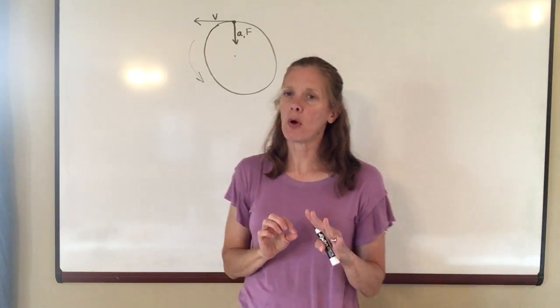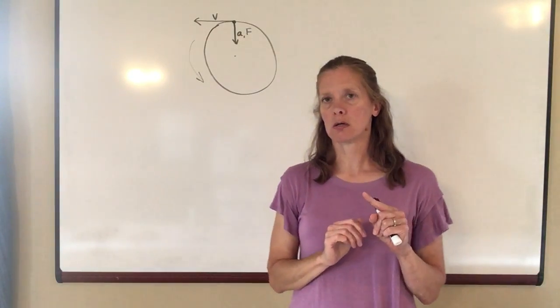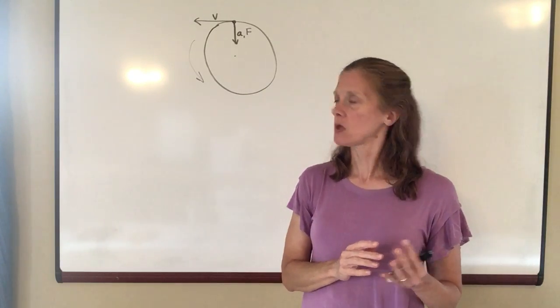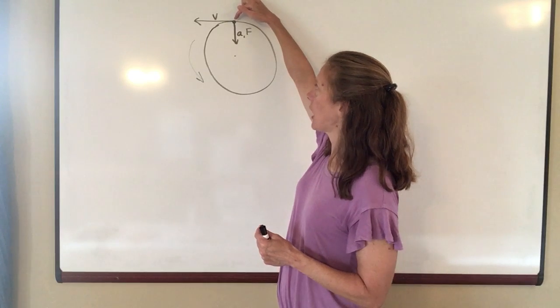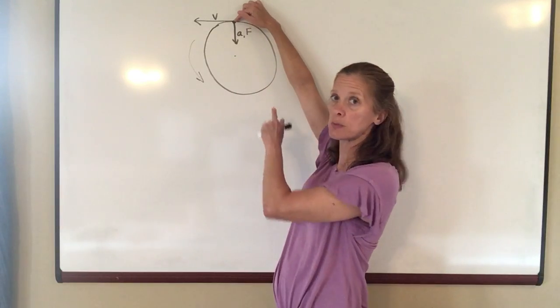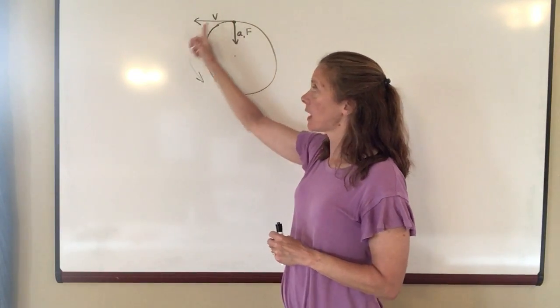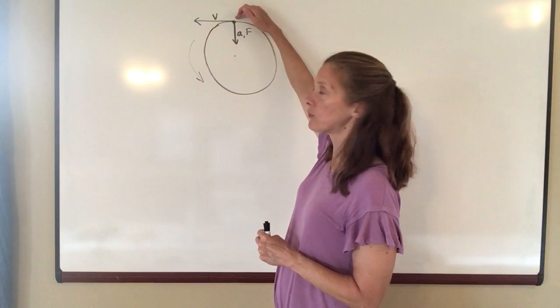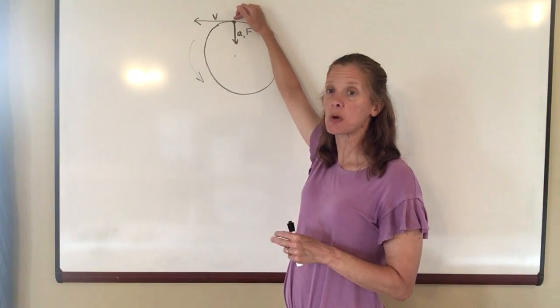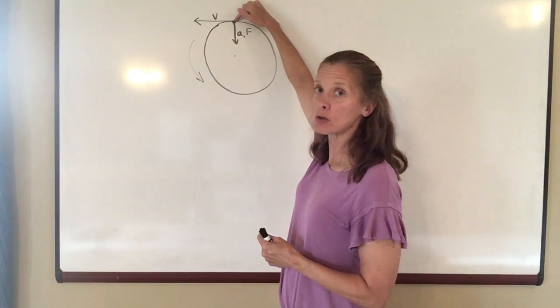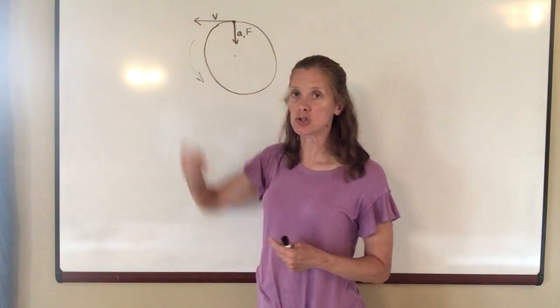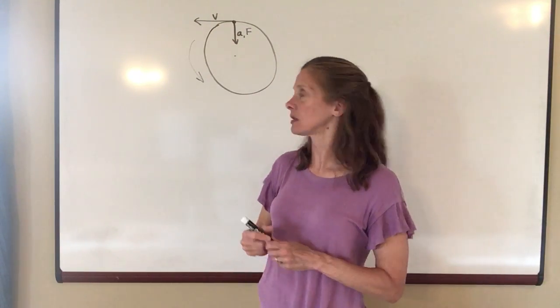Now, one thing that I want to point out here: if the string suddenly broke while you were twirling it, what would have happened? Well, if the object was at this particular point in its journey around the circle and the string suddenly breaks, does the object keep moving in a circle? No, because when the force is removed, the object is going to move in a straight line. That's what Newton's first law tells us. So at this particular point in the circle, the object would fly off in a straight line that direction if the string suddenly broke.